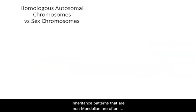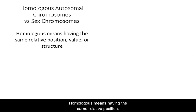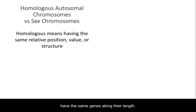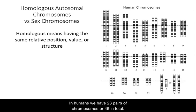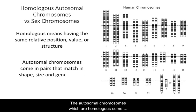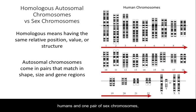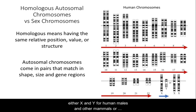Inheritance patterns that are non-Mendelian are often linked to sex chromosomes. Homologous means having the same relative position, value, or structure. The autosomal chromosomes typically come in pairs that match in shape and size, and the members of each pair are called homologous because they have the same genes along their length. In humans, we have 23 pairs of chromosomes, or 46 in total. There are 22 pairs of autosomal chromosomes and one pair of sex chromosomes — either X and Y for human males, or X and X for human females.